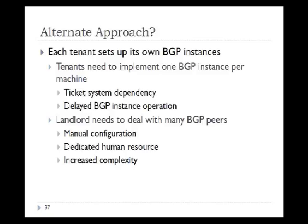One alternate approach would be for each tenant to set up their own BGP instance to control routing. However, tenants would still depend on the ticket system because every time they add a new BGP instance they need to go through the system admin to set up a peering session, meaning BGP instance operation may be delayed. Additionally, the landlord must deal with potentially many BGP peers, requiring a lot of manual configuration, dedicated human resources, and increasing maintenance complexity as the number of BGP peer instances grows.